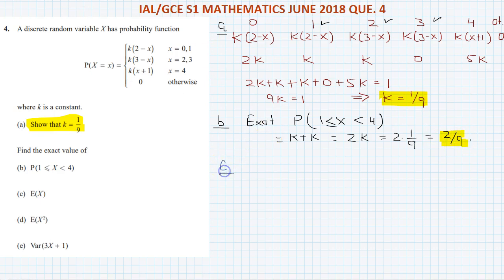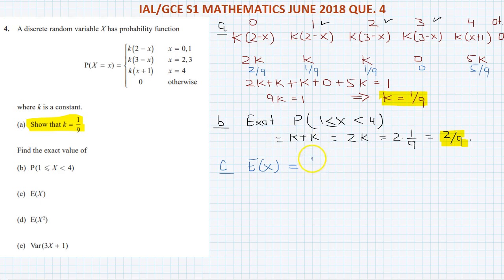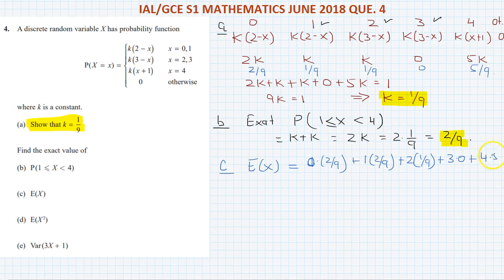Now part C: find E(X). The probabilities are: P(0) = 2/9, P(1) = 1/9, P(2) = 1/9, P(3) = 0, P(4) = 5/9. So E(X) = 0·(2/9) + 1·(1/9) + 2·(1/9) + 3·0 + 4·(5/9).